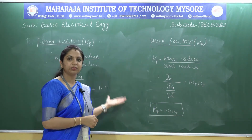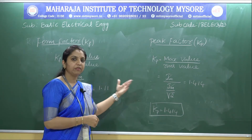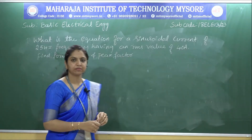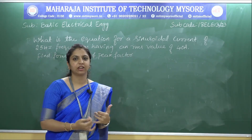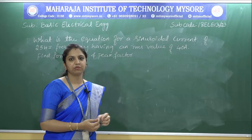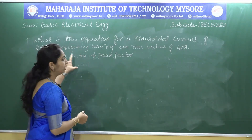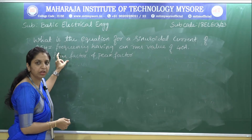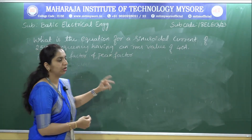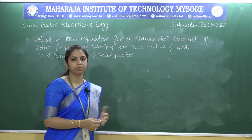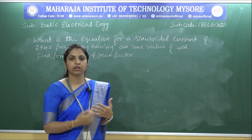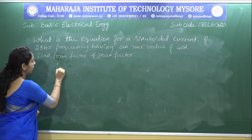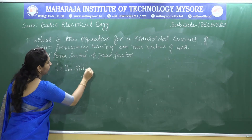Let us now see an example based on RMS value, average value, form factor, and peak factor. In the given problem: find the equation for a sinusoidal current of 25 Hz with an RMS value of 40 amperes. We need to write the instantaneous current equation i = I_M sin(ωt). To do this, we must find the maximum current I_M and the angular frequency ω.